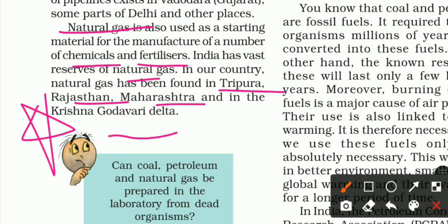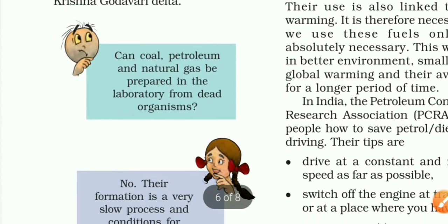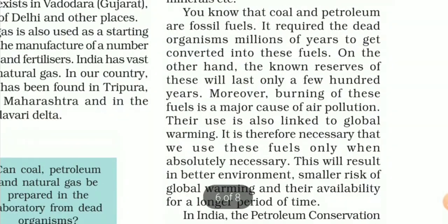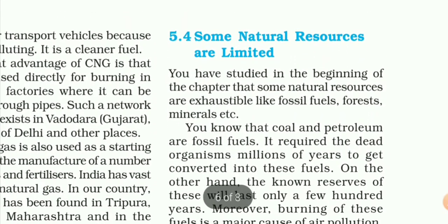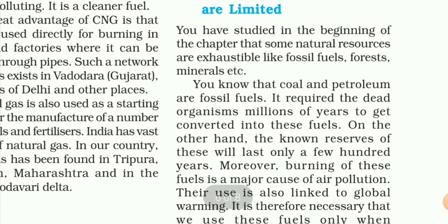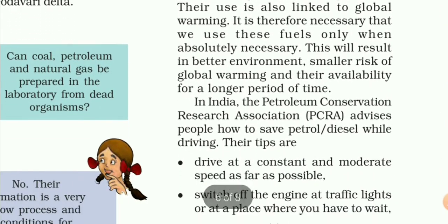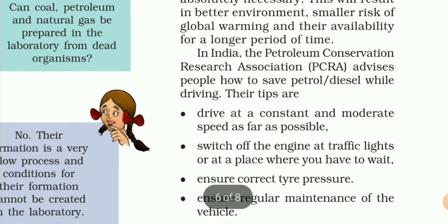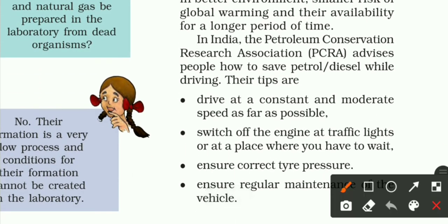Yahan se questions poochh lete hain. Natural gas has been found in India in Tripura, Rajasthan, Maharashtra, and Krishna Godavari Delta. In India, PCRA — Petroleum Conservation Research Association — advises people how to save petrol and diesel while driving.